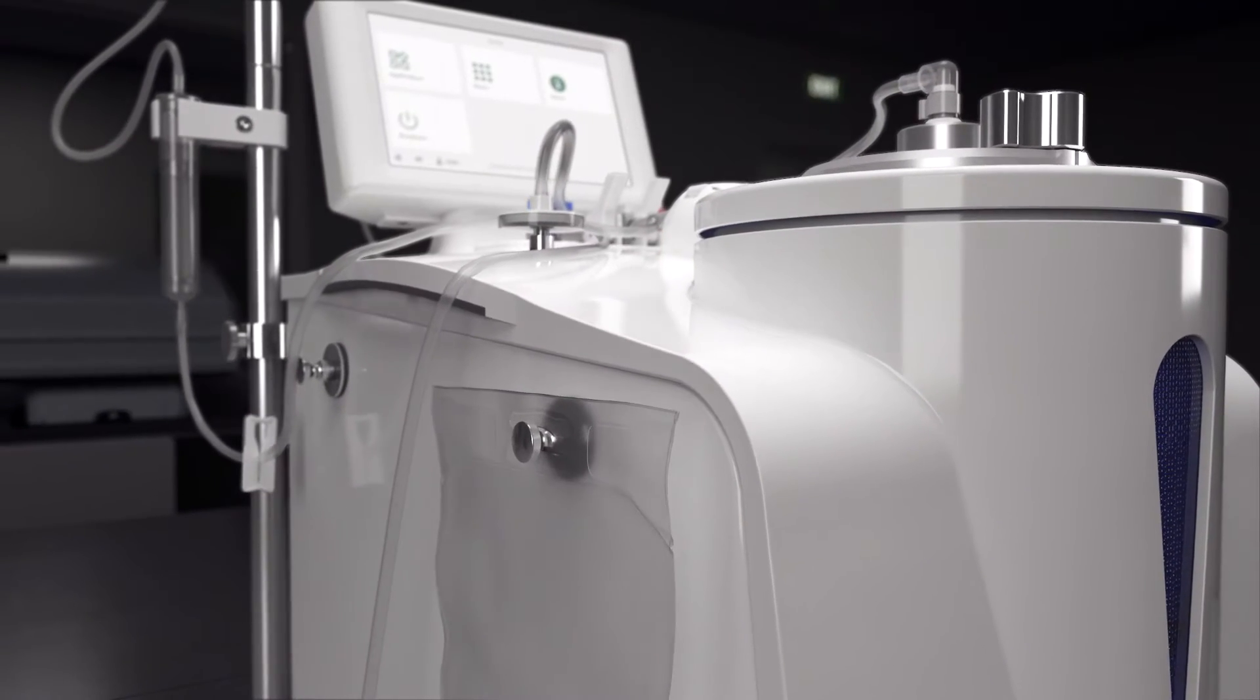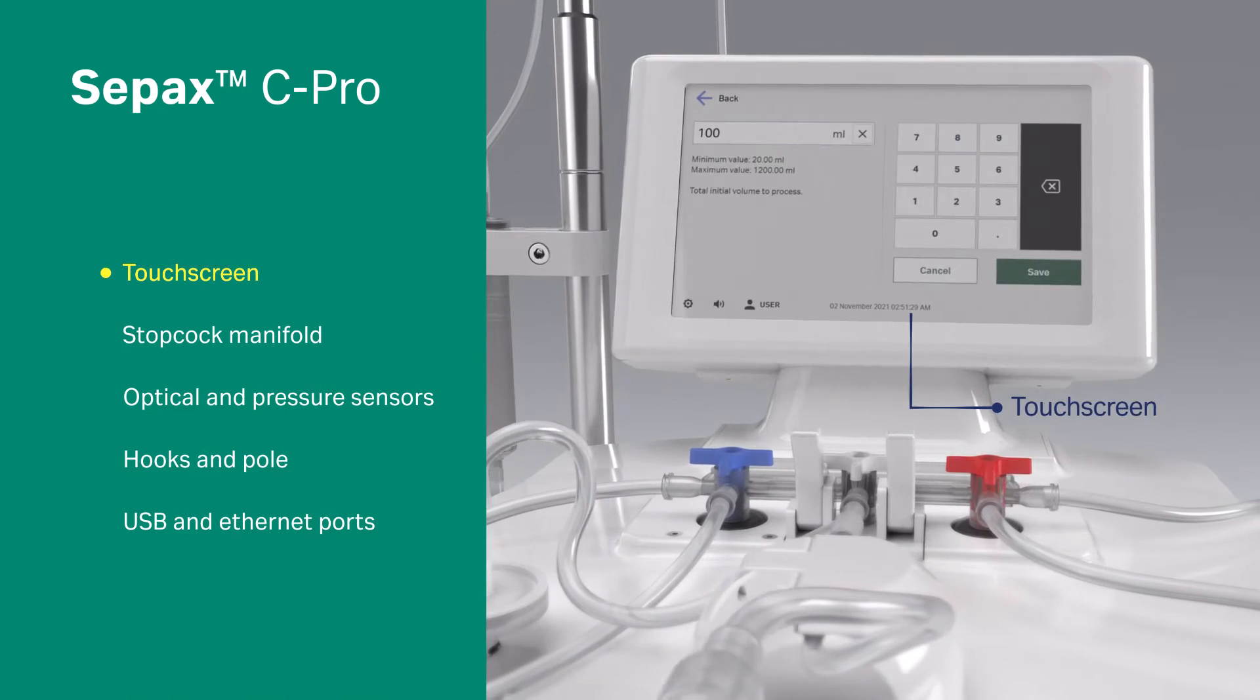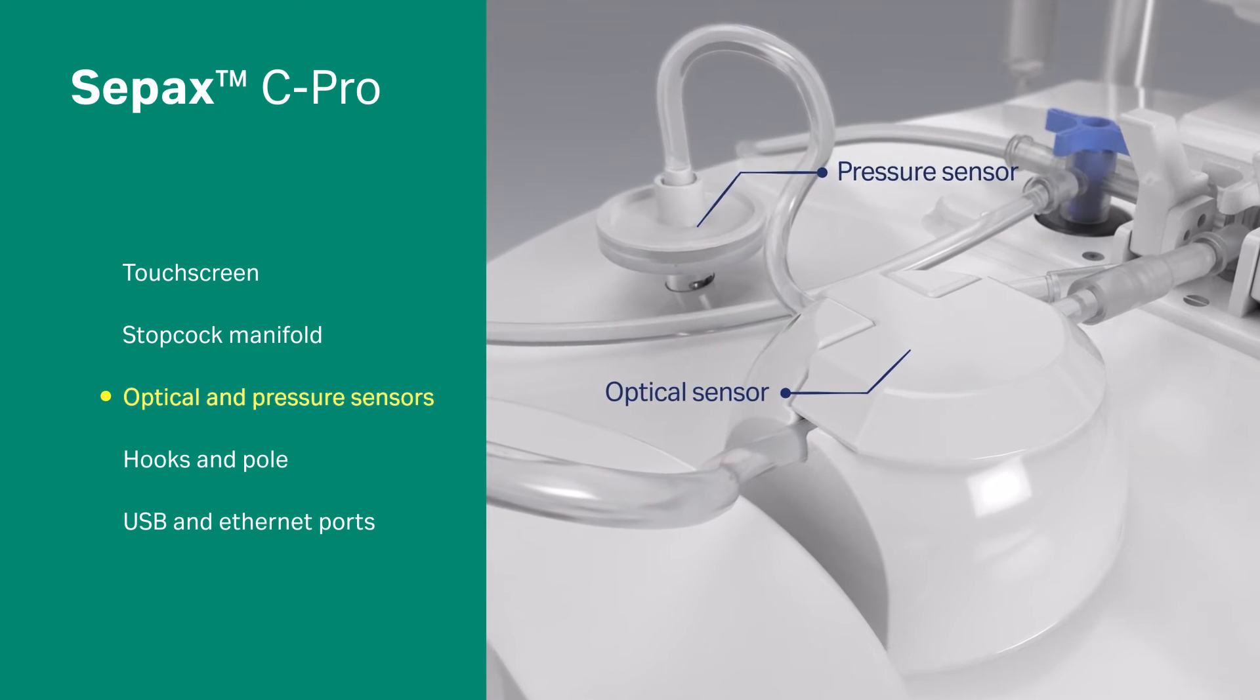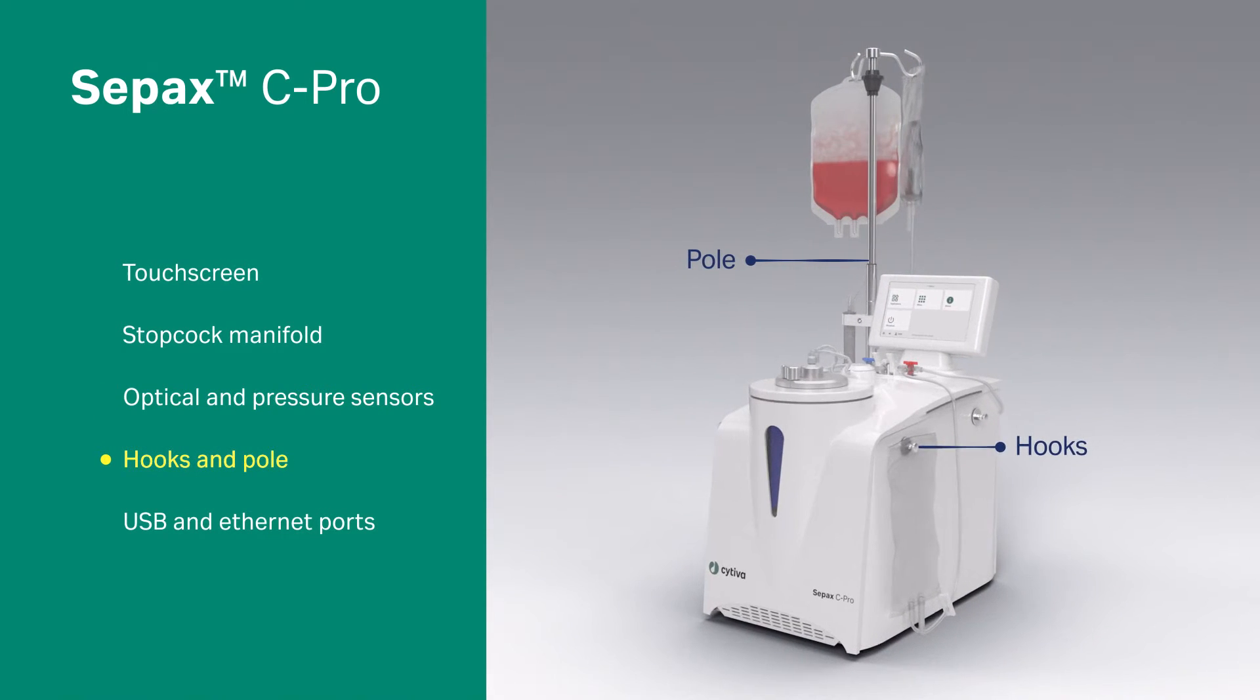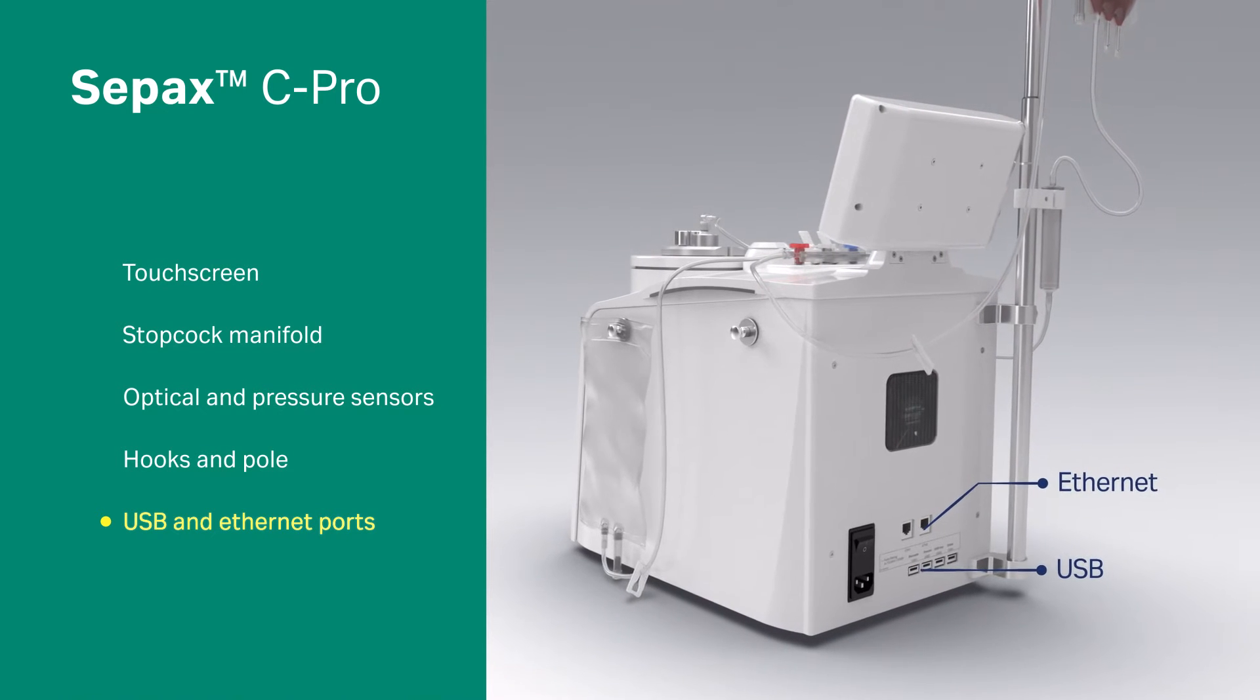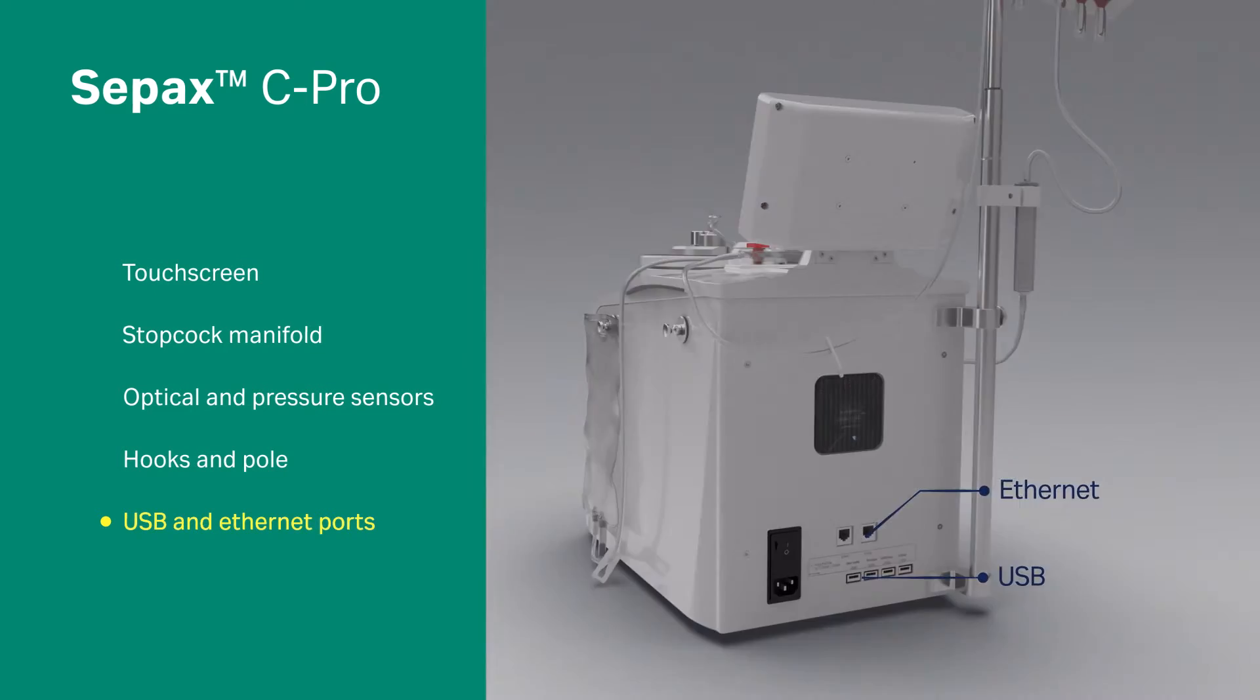The main features of CPAC CPRO System include touchscreen-based user interface, stopcock manifold for controlling the flow path, optical and pressure sensors for process monitoring, hooks and pole for hanging process bags, and USB and Ethernet ports that provide connectivity and traceability using a barcode reader or chronicle automation software.